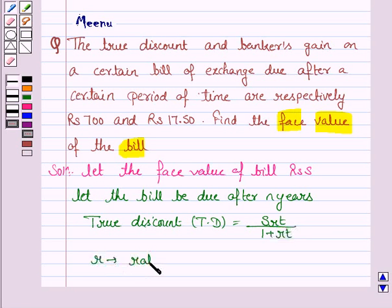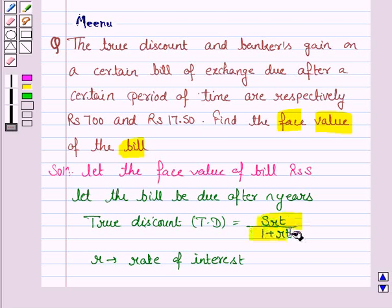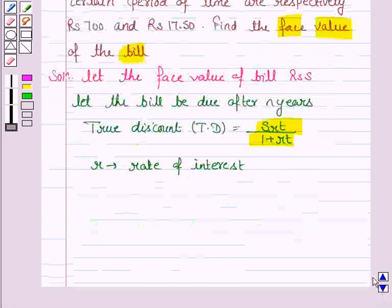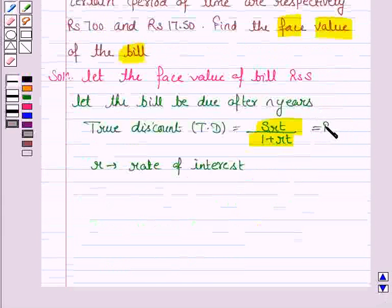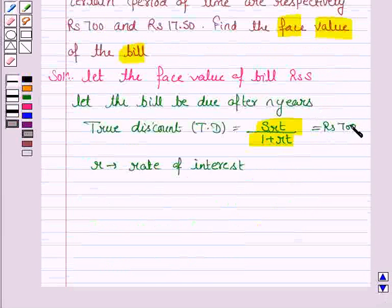S is the face value of the bill, and it is given to be rupees 700.